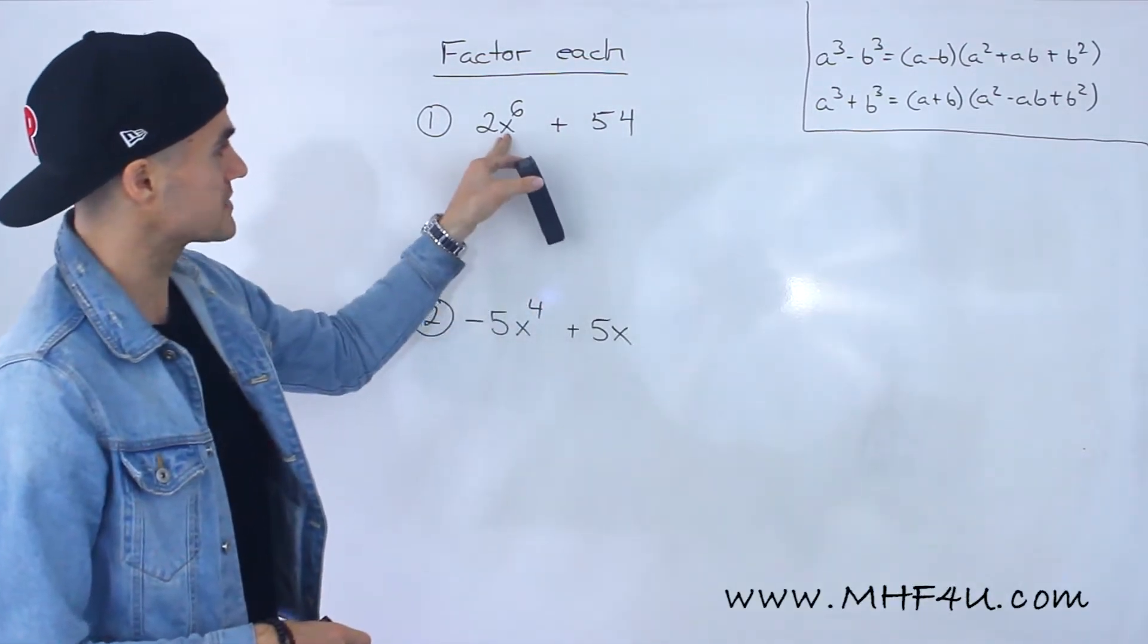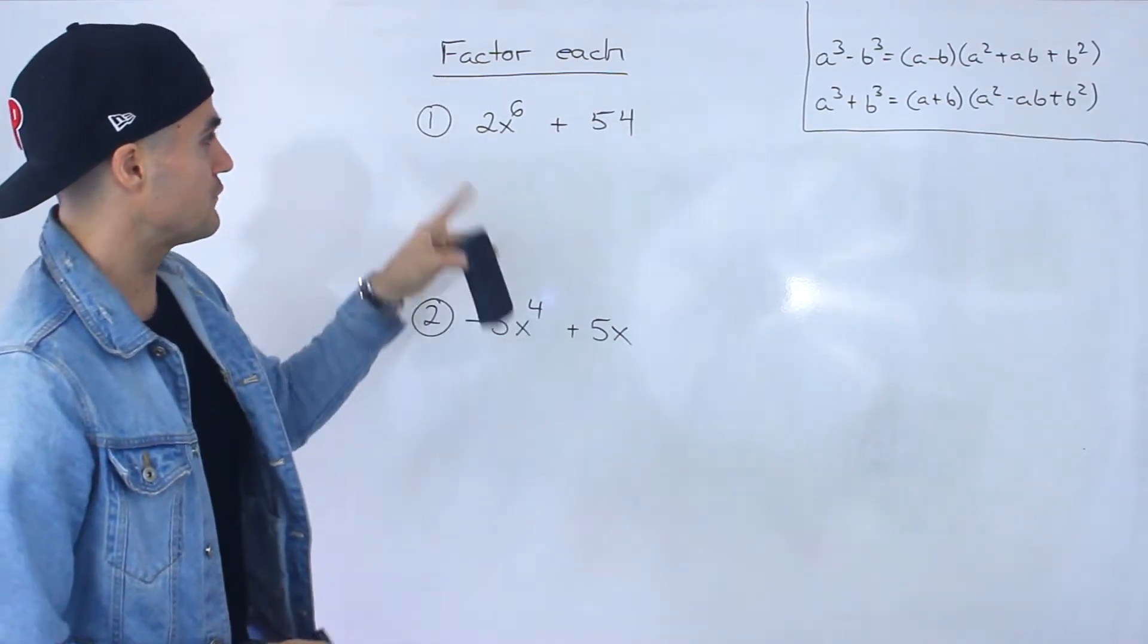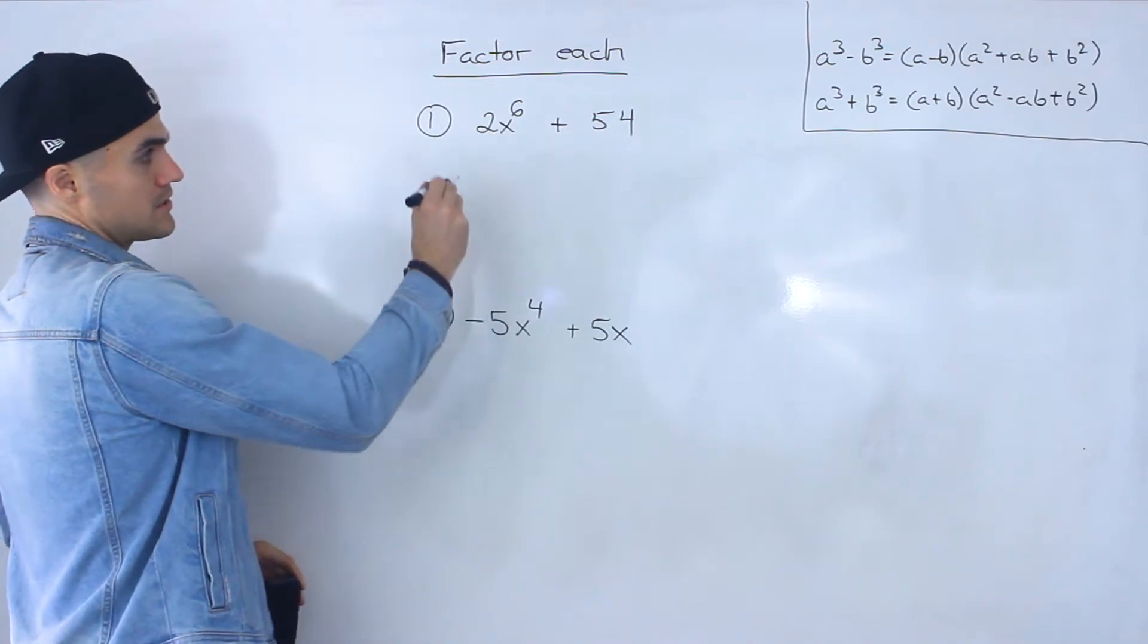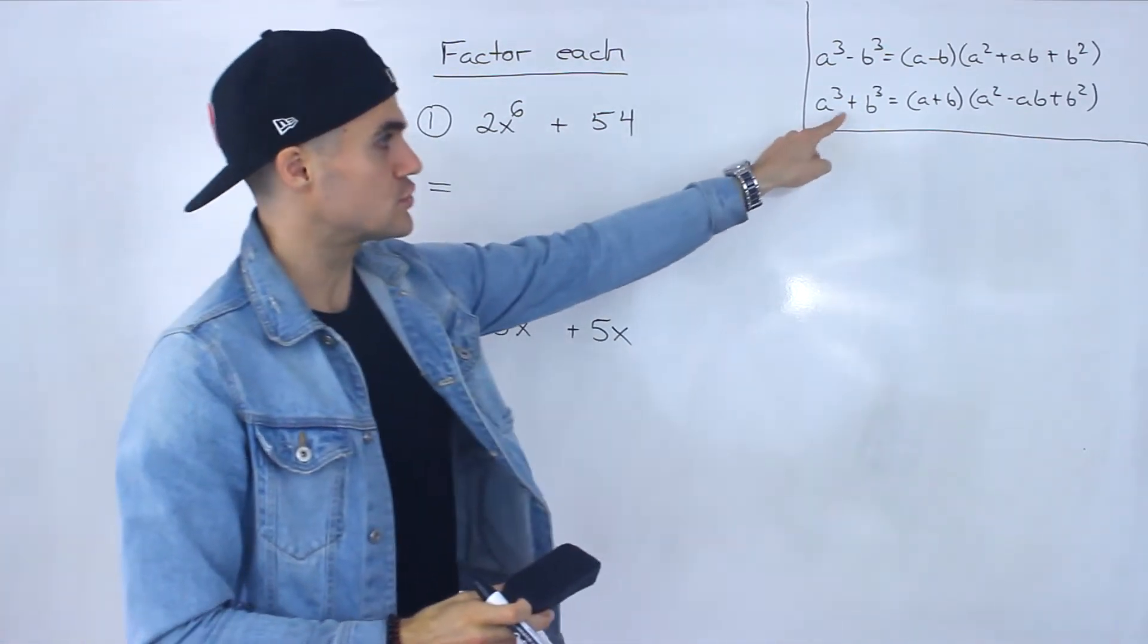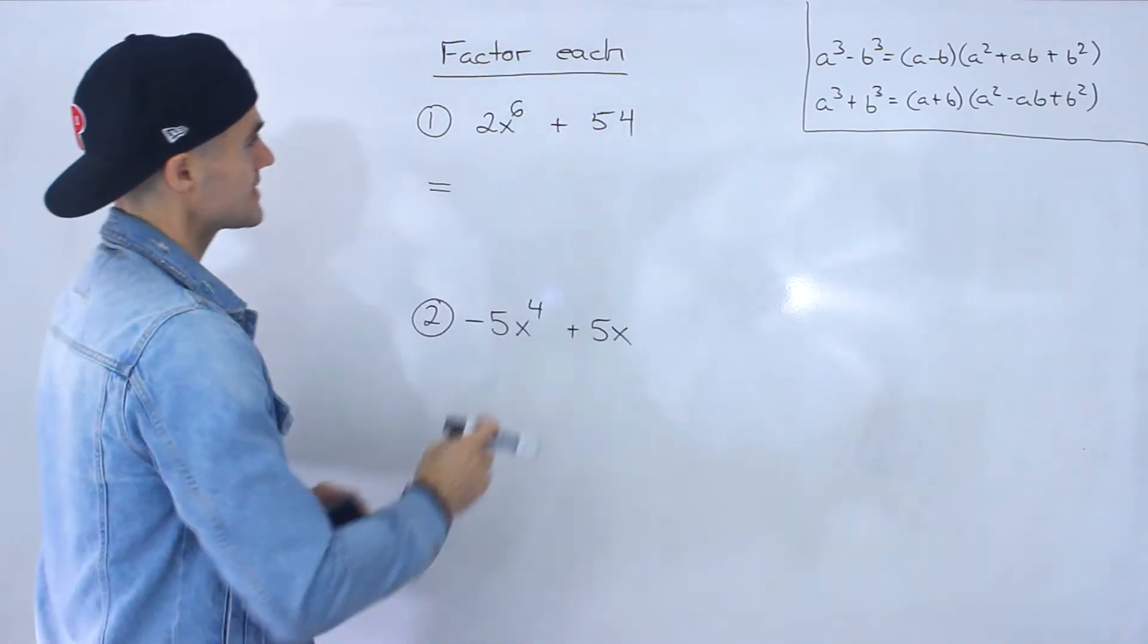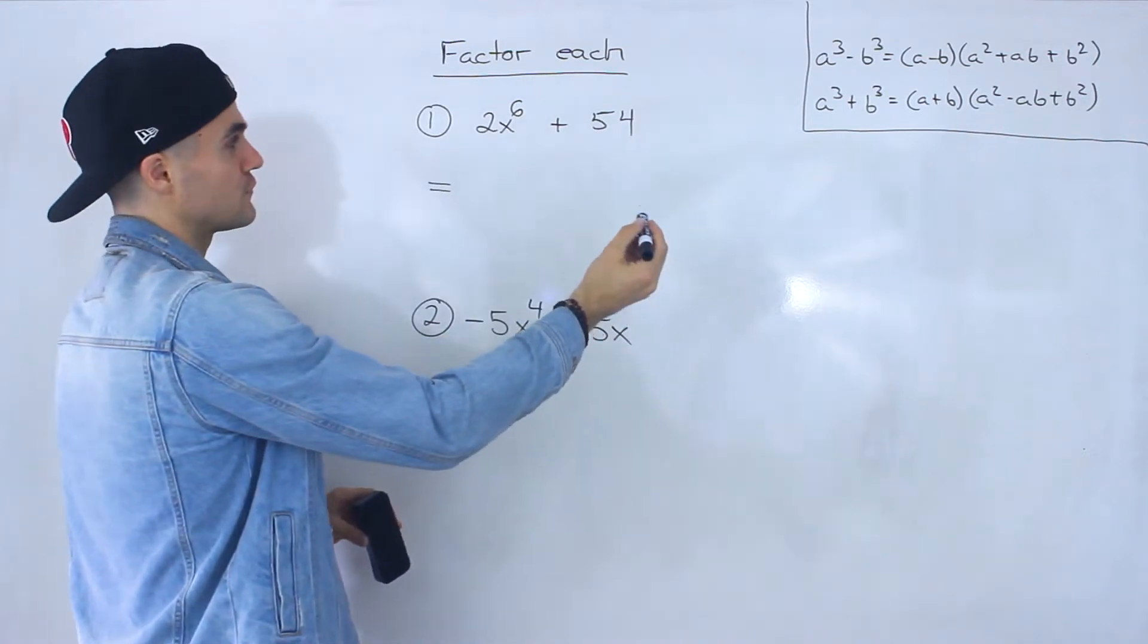Starting with this one, we got 2x to the power of 6 plus 54. So how can we factor this here? Well notice that right off the bat if we were to try to do a sum of cubes on this, notice that we can't really take the third root of 2. We can't really take the third root of 54.